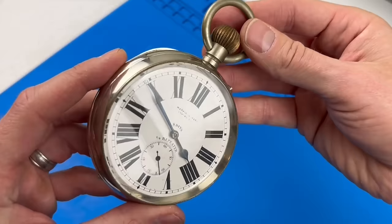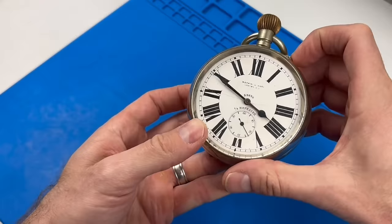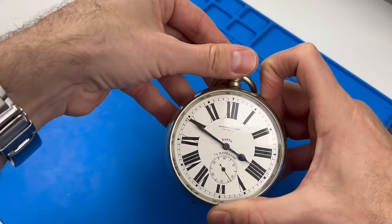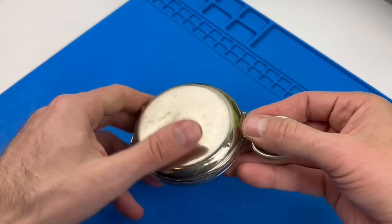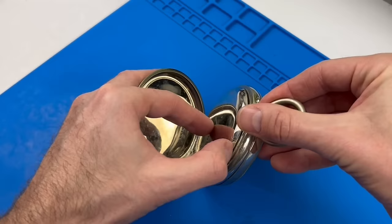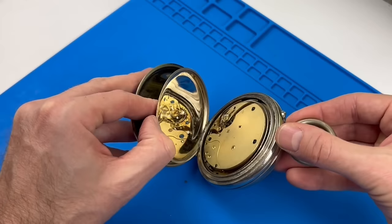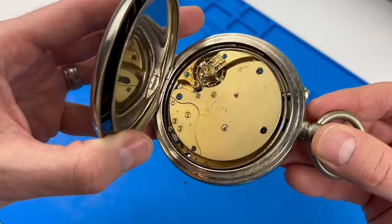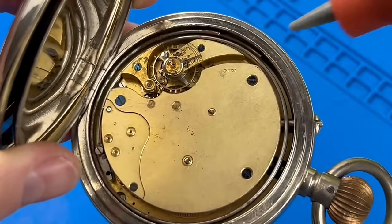Not quite a pocket watch, but not a clock either, this timepiece is sometimes referred to as a Goliath watch. It's a quarter repeater, meaning it should chime the hours and number of elapsed quarters past the hour. I believe it would sit on a bedside table and one could reach over and hit the crown to hear the time without needing to turn on a lamp to see it.